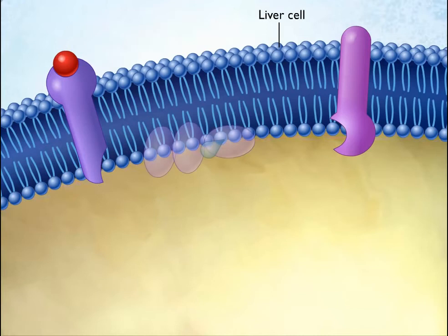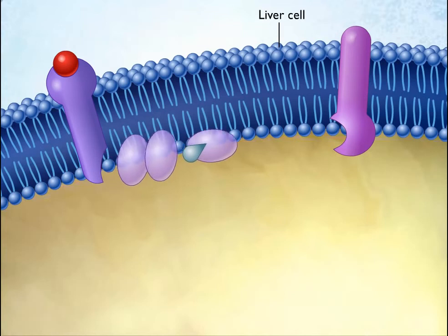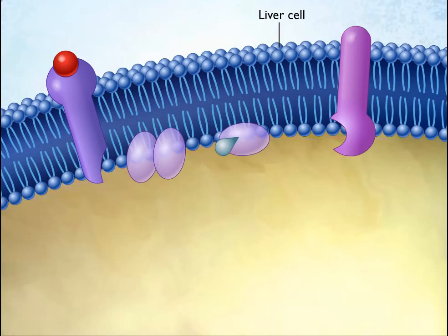When epinephrine binds to beta-adrenergic receptors on the liver cell, G proteins on the inner side of the cell membrane are activated. Each G protein is composed of three subunits, and the binding of epinephrine to its receptor protein causes one of the G protein subunits to dissociate from the other two. The G protein subunit which dissociates carries a GDP, which is replaced by GTP when the subunit is activated.